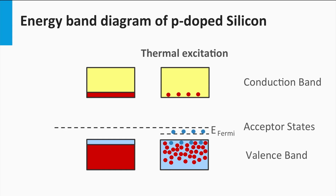For silicon at room temperature, many electrons of the valence band can be excited to the acceptor states. As a result we have more free mobile holes than mobile electrons in a p-type semiconductor. The electrons are the minority charge carriers and the holes are the majority charge carriers. As the holes are the majority charge carriers, the Fermi level will be closer to the valence band than to the conduction band.